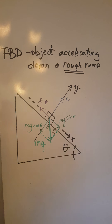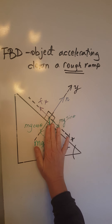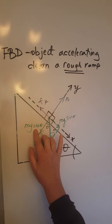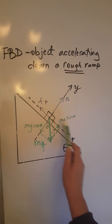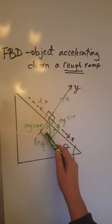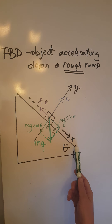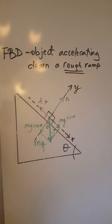Now we have all forces resolved into the two directions. Remember, once we resolve mg we don't count it anymore — we only look at the components mg sine theta and mg cosine theta. We now have two forces along the x-axis and two forces along the y-axis. Since the object accelerates along the x-axis, the y forces must be balanced.